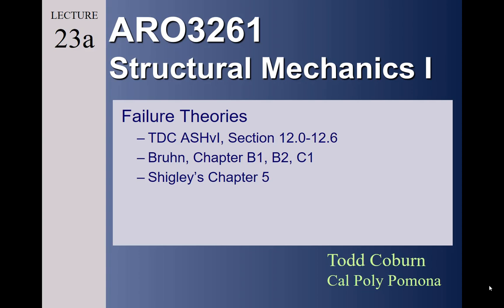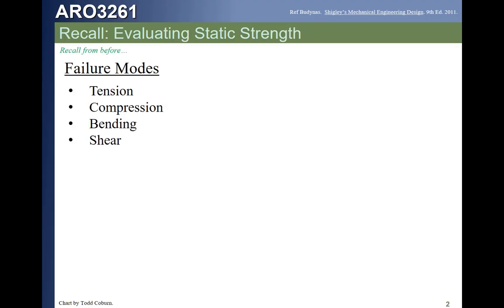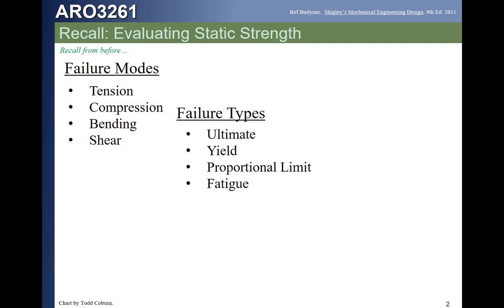This is Todd Coburn of Cal Poly Pomona with AERO 3261 Lecture 23a on failure theories. So far we have looked at structures being loaded with tension, compression, bending, and shear — usually not a combination, although we sometimes get an axial load as well as a bending load. We've looked at mostly ultimate failure of structures, haven't used a lot of yield except a little bit for compression, and haven't done much with the proportional limit nor with fatigue.